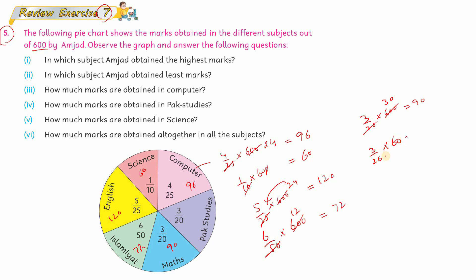Now for Pak Studies, it is 3 by 20. Multiply this by 600 as well. When you divide by 20, we get 30 again. 30 into 3 gives 90 there too. So Amjad has obtained 90 marks in Pak Studies as well.